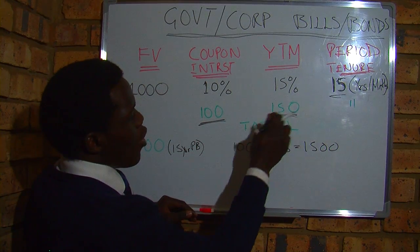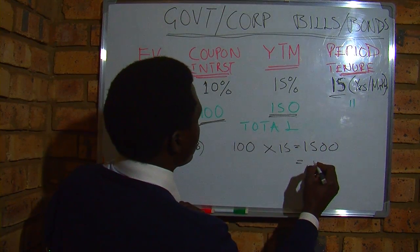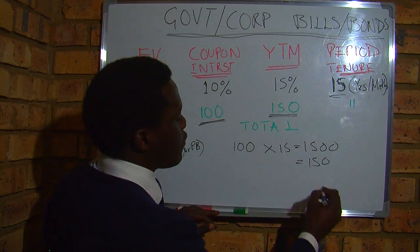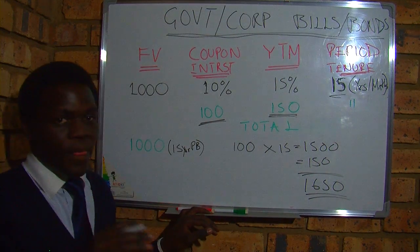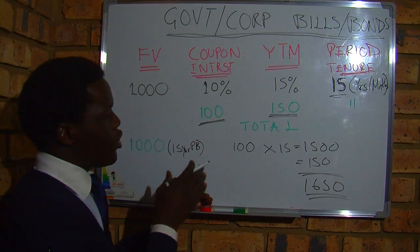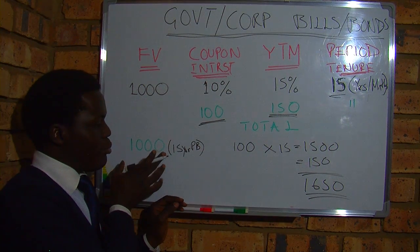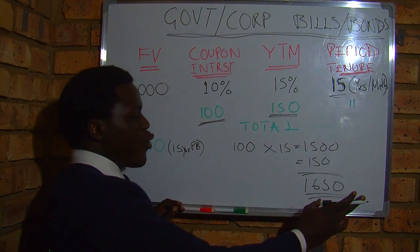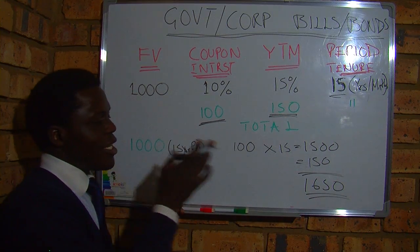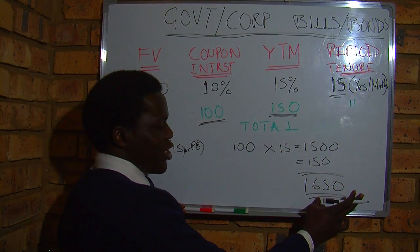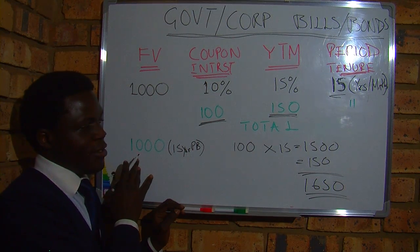So that's one thousand five hundred in interest, plus one hundred and fifty for holding this debt after 15 years as your yield to maturity bonus, giving us one thousand six hundred and fifty. The key thing is that since this is a loan, you're also going to get your original one thousand back. So your investment of one thousand will return one thousand six hundred and fifty in interest plus your one thousand principal repaid after 15 years.